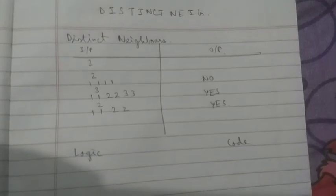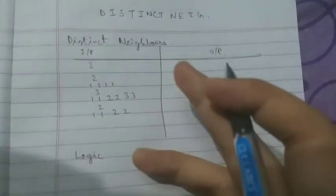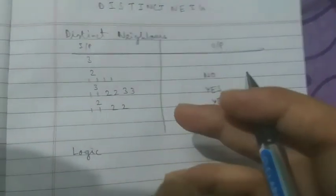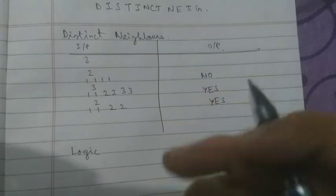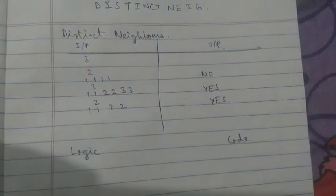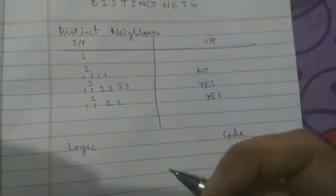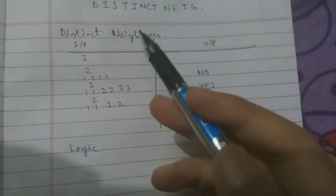There is this very interesting problem called 'distinct neighbors'. This problem occurred in the CodeChef Starter 64 challenge.